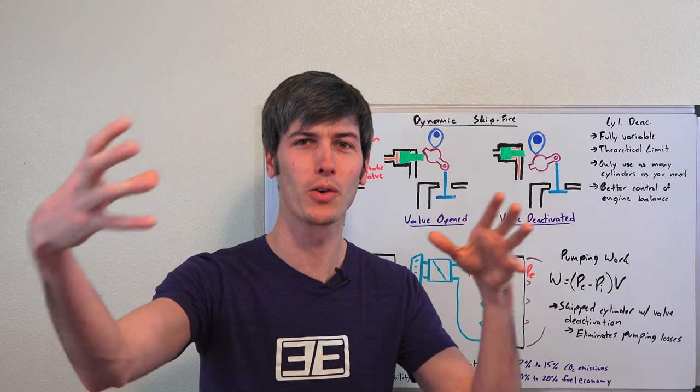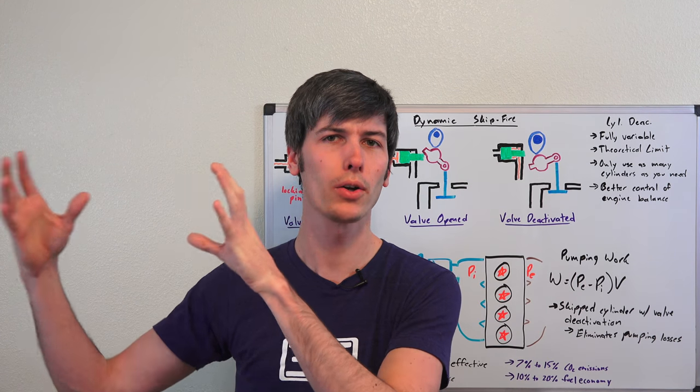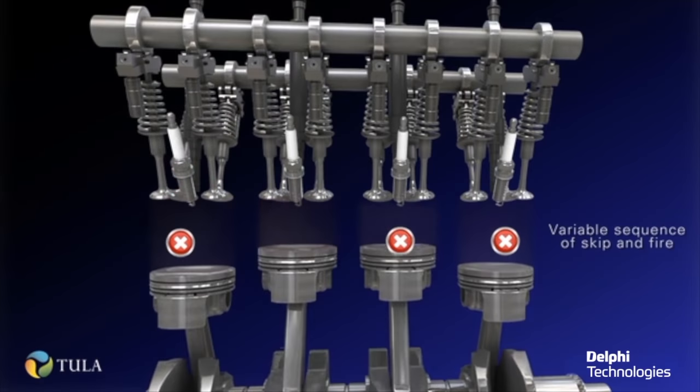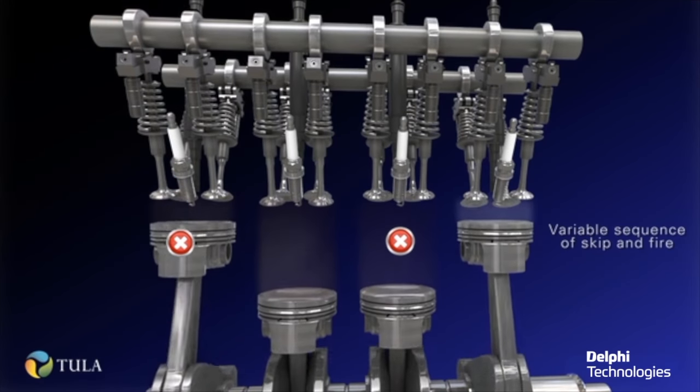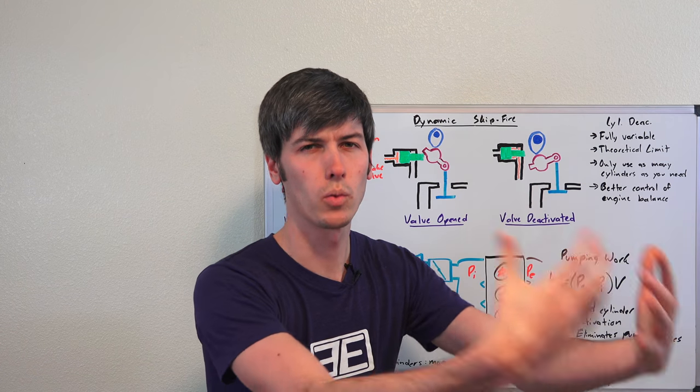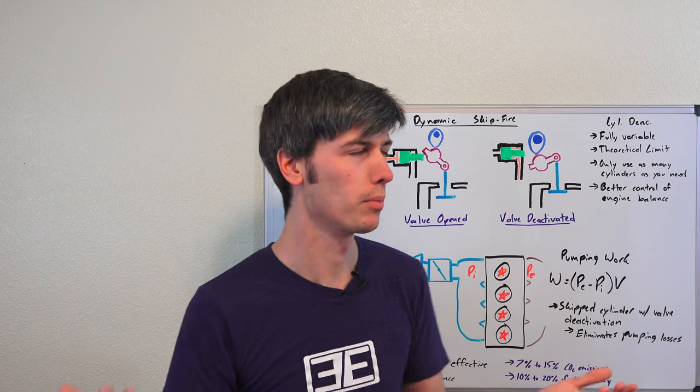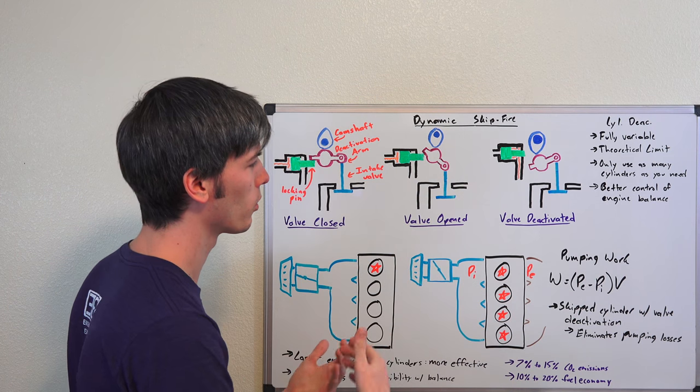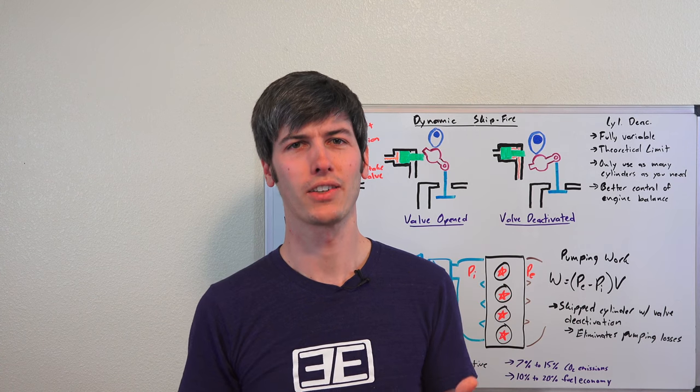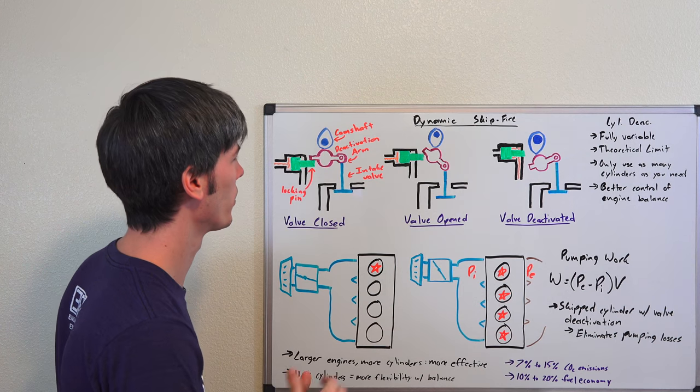So this technology isn't going to make an already super efficient small compact engine more efficient, but it will bring a larger engine closer to those fuel economy numbers. So that's the goal with this technology, and essentially what it does is it gives you fully variable cylinder deactivation. So let's say you have a V8 engine, well you can run on one cylinder, or you can run on eight cylinders, or you can run on any combination of cylinders in between. So that's kind of the beauty of this, is it allows you to run on any number of cylinders, and it's the theoretical limit of what cylinder deactivation can be, and how it can improve your vehicle's fuel economy through cylinder deactivation.